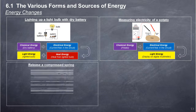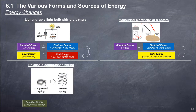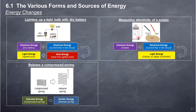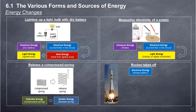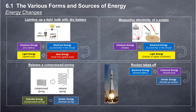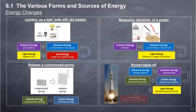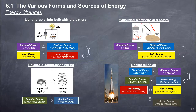Releasing a compressed spring: The energy changes are — potential energy of the compressed spring changes to kinetic energy of the spring released back to its original position. Rocket takes off: Electrical energy of the rocket battery for engine ignition, plus chemical energy of rocket fuel, changes to kinetic energy of the rocket's upward motion, plus potential energy as the rocket leaves the ground, plus light, heat, and sound energy of the rocket exhaust plume.